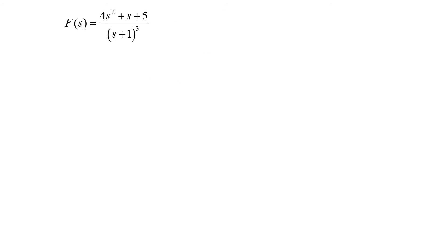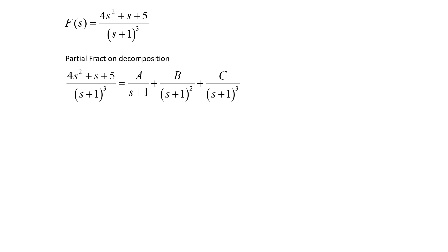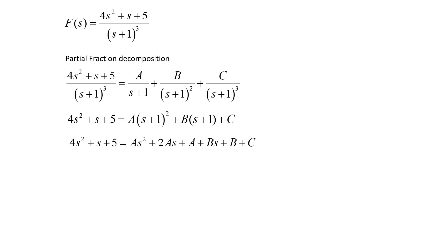Now that big F of s is isolated, we take the inverse Laplace transform using partial fractions. We decompose 4s squared plus s plus 5 over s plus 1 cubed as a over s plus 1 plus b over s plus 1 squared plus c over s plus 1 cubed. Multiplying both sides by s plus 1 cubed gives 4s squared plus s plus 5 equals a times s plus 1 squared plus b times s plus 1 plus c. Distributing and expanding: 4s squared plus s plus 5 equals a s squared plus 2as plus a plus b s plus b plus c.